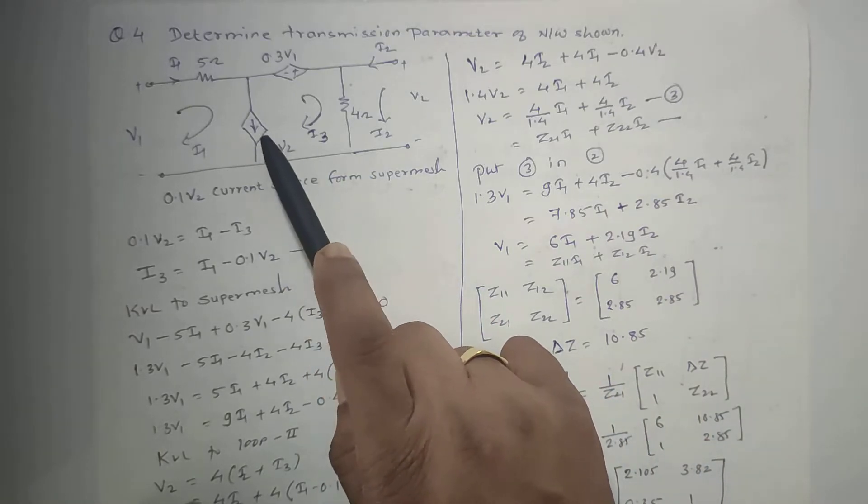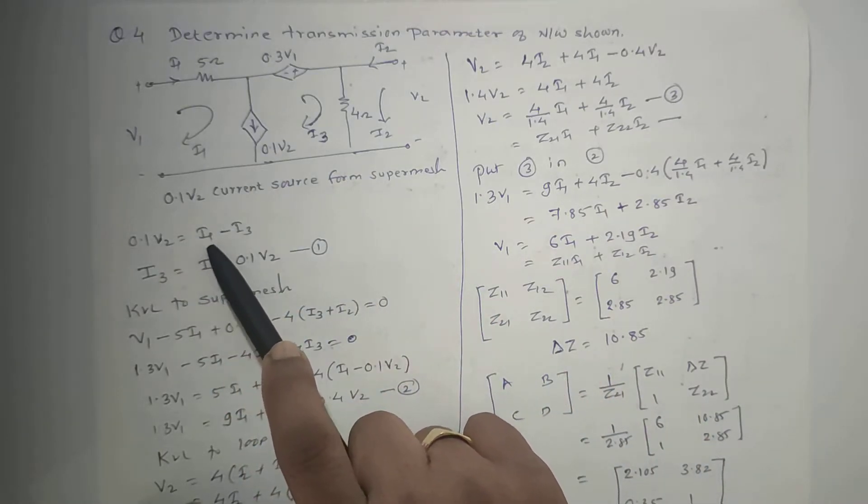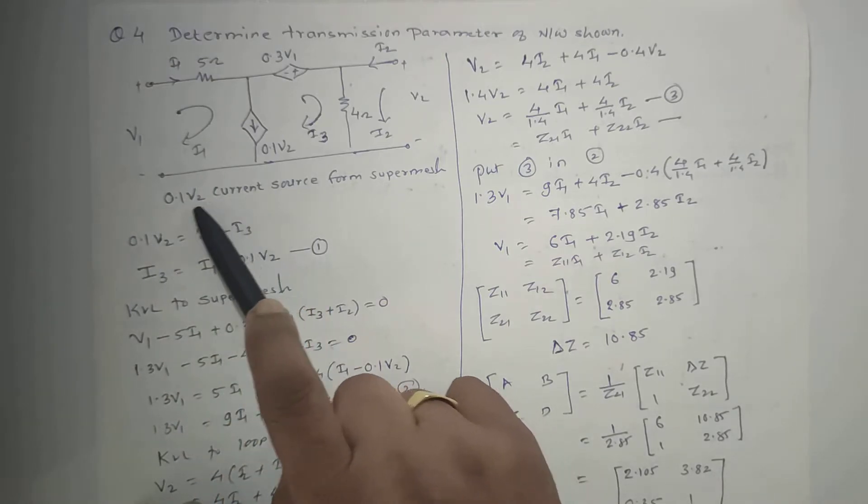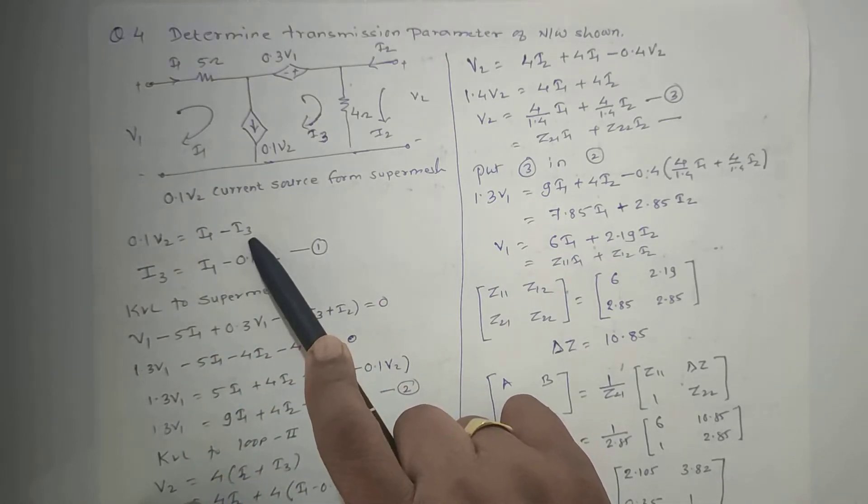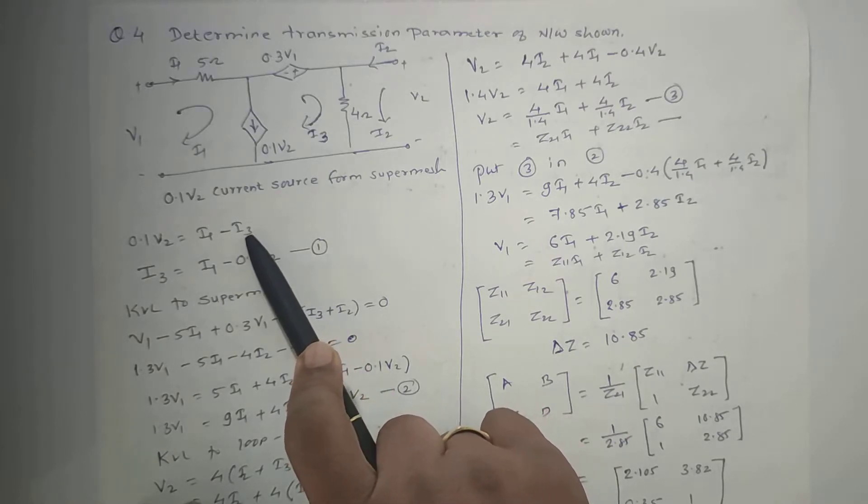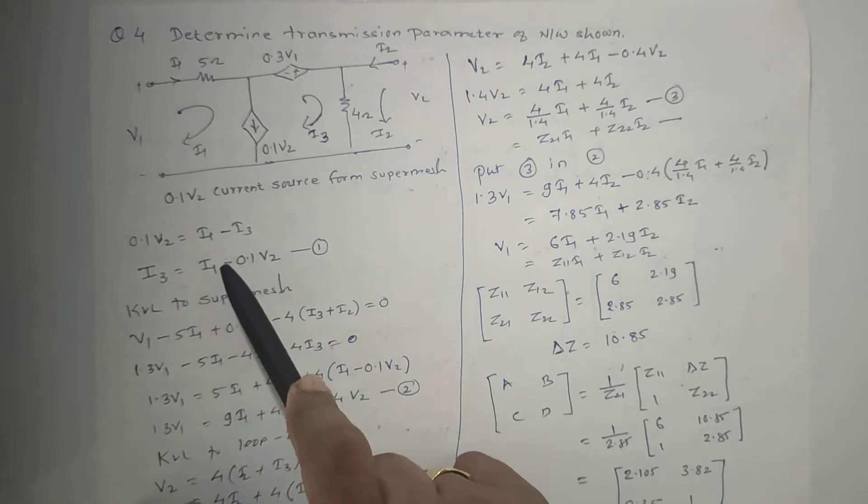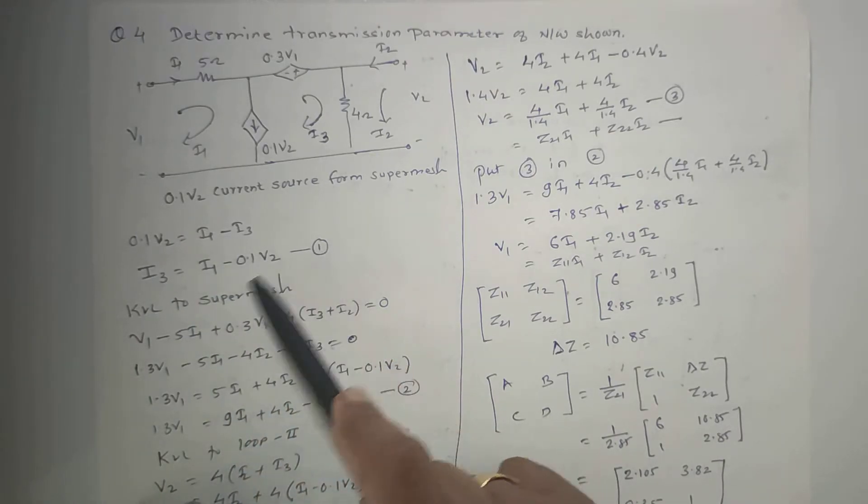This will give us one equation: 0.1V2 equals I1 minus I3. The undesirable variable is I3, and therefore we will obtain I3 in terms of I1 and V2. So I3 equals I1 minus 0.1V2. This is equation 1.